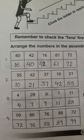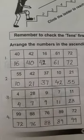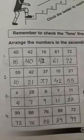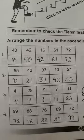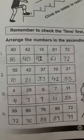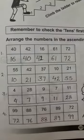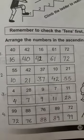Our second example is 55, 42, 37, 10, and 21. In ascending order: 10 is the smallest number, followed by 21, then 37, followed by 42, and 55 at the end.